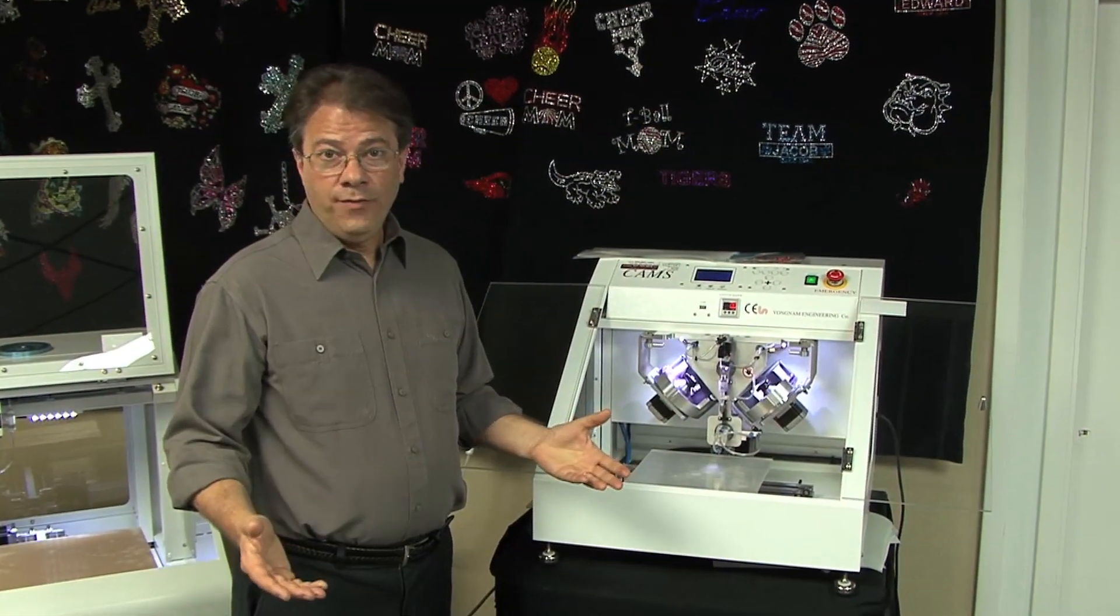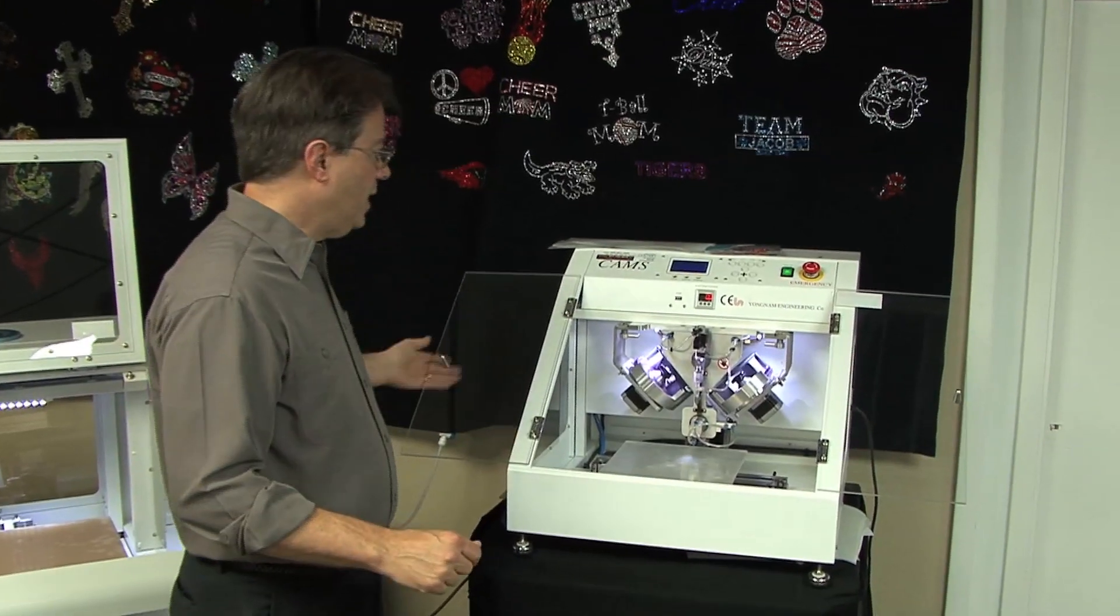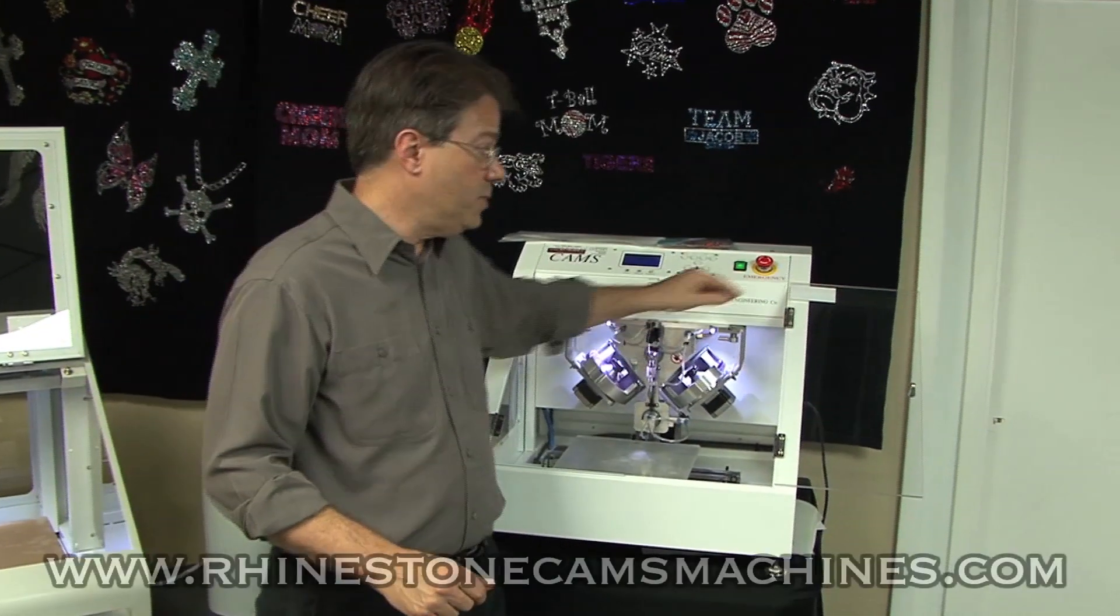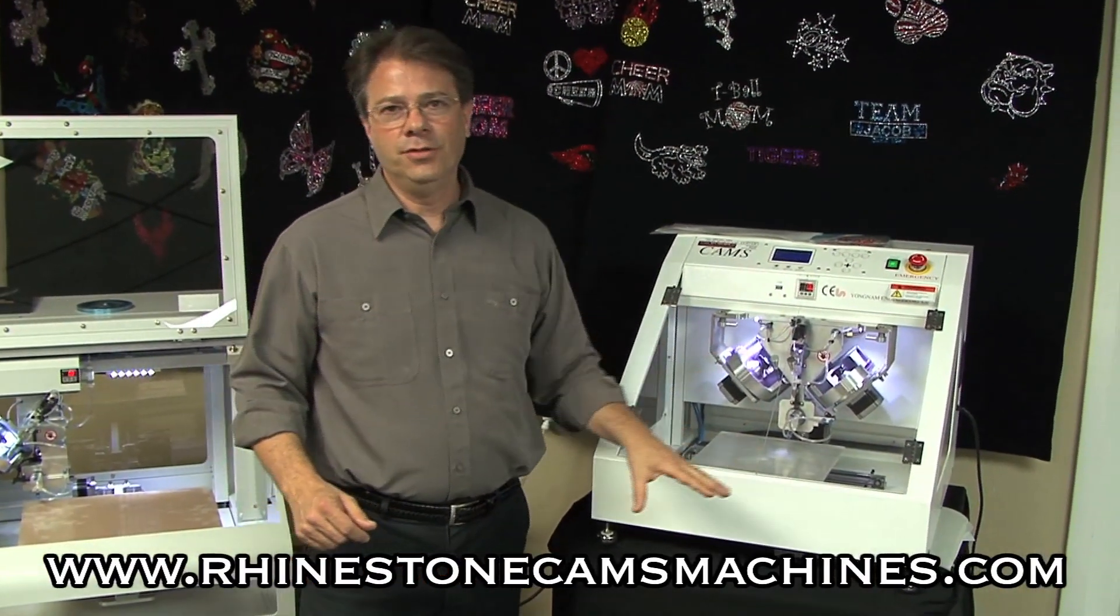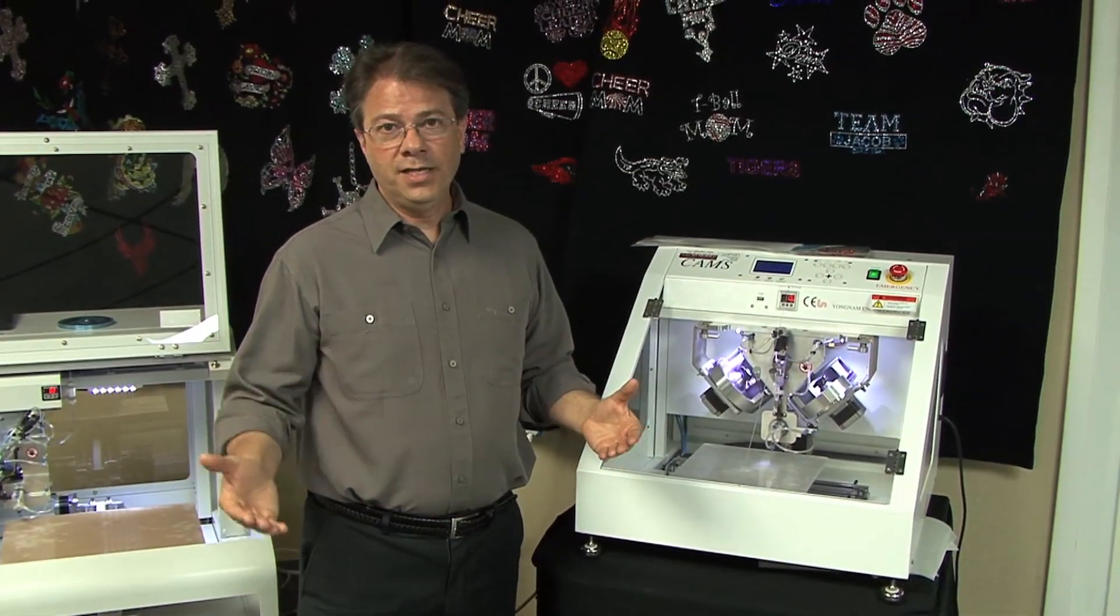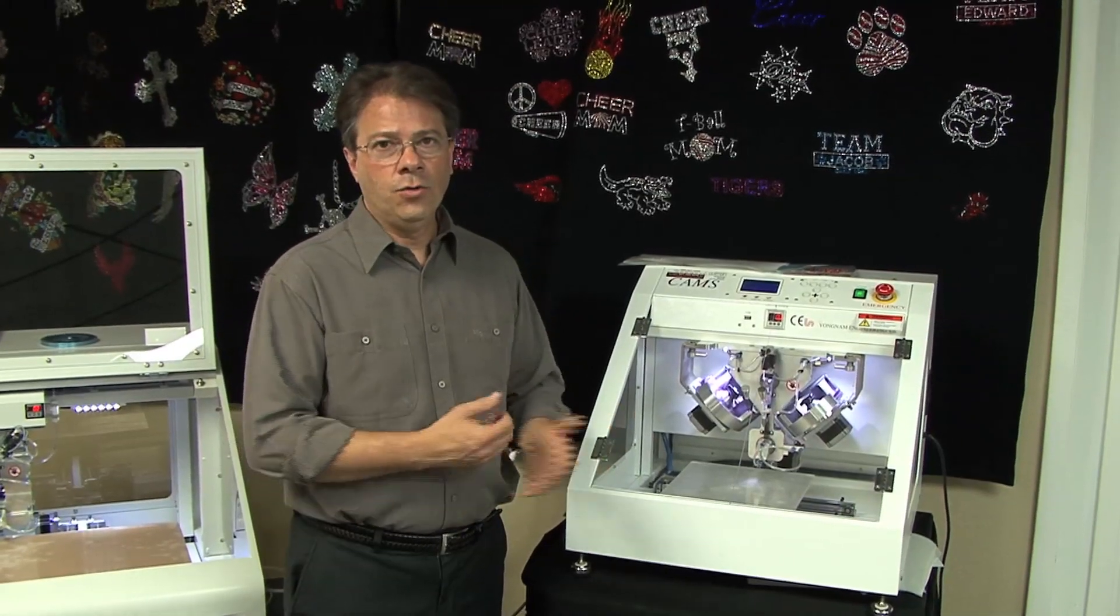So I hope we've answered your questions about how an automatic rhinestone machine works. This is the 1v2p, the cams machine from Koldesi, and you've seen the platen, the feeder plates, the hoppers, the air compressor and the dryer—these are the common components. If you have any questions or if you'd like to see more videos, just fill out the contact us form, give us a call, or check us out on YouTube.